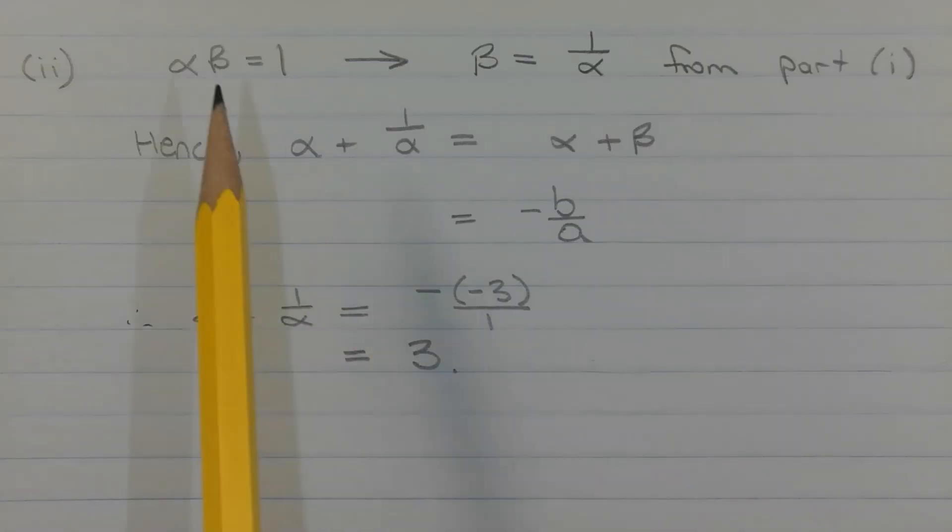From part 1, the product of the roots alpha beta equals 1. Rearranging this equation to make beta the subject, we get beta equals 1 over alpha.